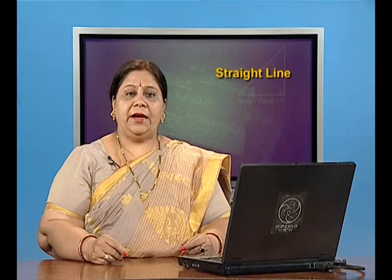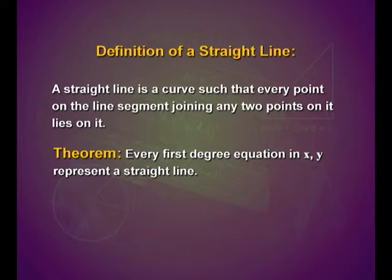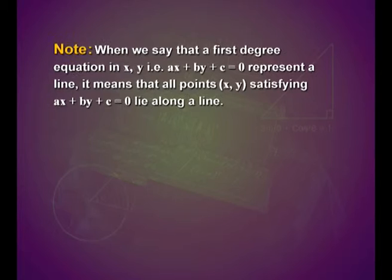We have a theorem related to the straight line, which states that every first degree equation in x and y represents a straight line. When we say that a first degree equation in x and y — that is Ax plus By plus c is equal to 0 — it means that all points (x, y) satisfying Ax plus By plus c equal to 0 lie along a line.